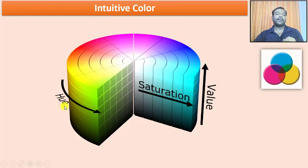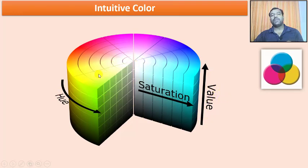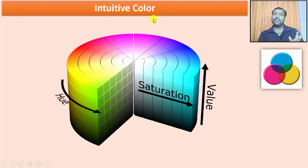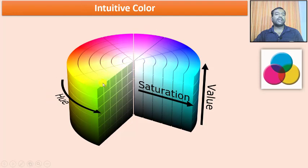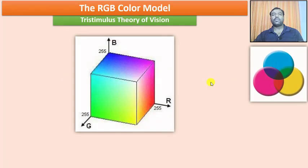In intuitive color, depending upon the parameters of hue, saturation, and value, these three properties of color will tell me what color I am going to observe. This is the intuitive color. If it is a primary color, pick any set of colors to define the particular color. If it is an intuitive color, adjust the values of these three parameters — hue, saturation, and value — to arrive at the intuitive color.